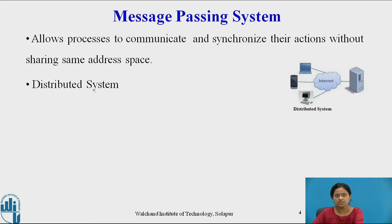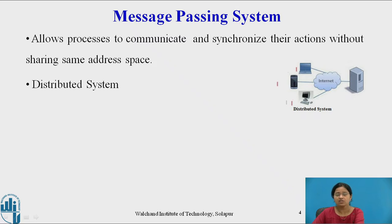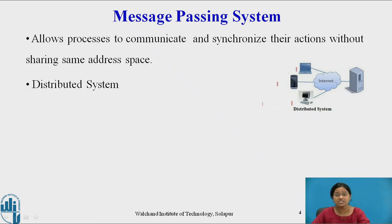What is a distributed system? A distributed system is a system where the processes which wish to communicate with each other reside on different systems, and all these systems are connected via the internet. Processes present on different systems communicate by passing messages to each other. Examples of this include internet chat applications or WhatsApp, where participants communicate by exchanging messages but all require an internet connection.